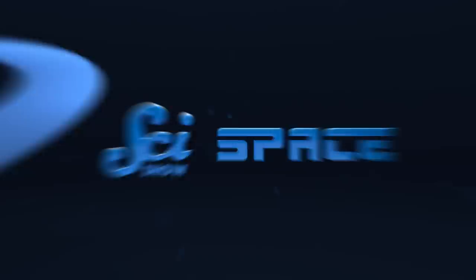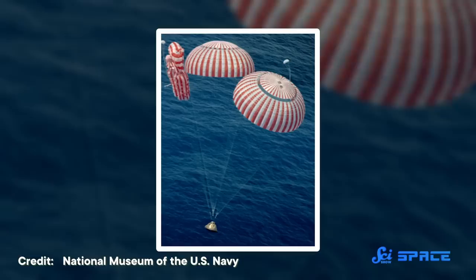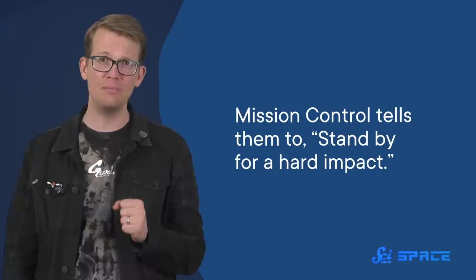It's August 7th, 1971, and the Apollo 15 astronauts are on their way home. They've entered the atmosphere, fired their control thrusters, and the parachutes have just deployed. And then Mission Control tells them to stand by for a hard impact. This is not what you want to hear when you are on your way home from the Moon.